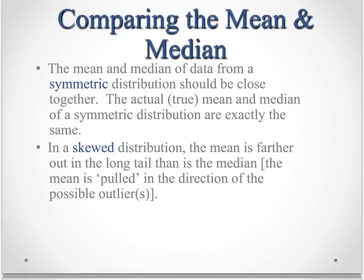But in a skewed distribution, the mean is farther out in the long tail than the median. So say you had a distribution that looked something like this, that is skew right because the long tail is to the right.